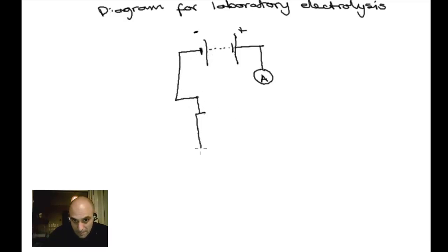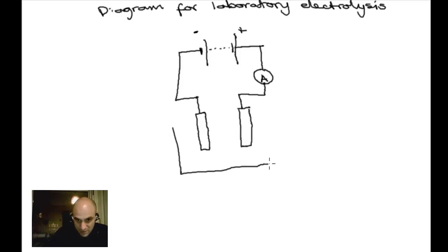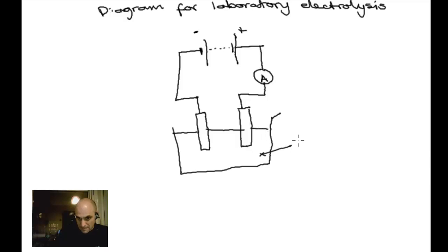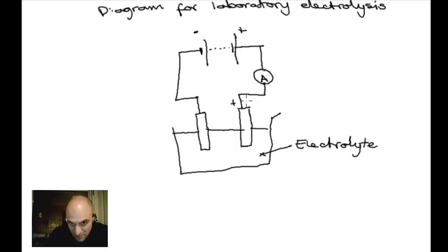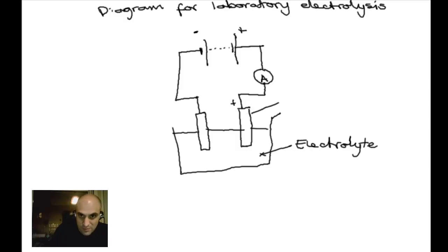We create our two electrodes connected in series, which we stick into a beaker containing our electrolyte. The positive terminal connects to the positive electrode. One way to remember: the long line in the battery symbol can be split into a plus sign. The positive electrode is known as the anode.